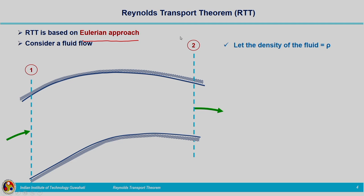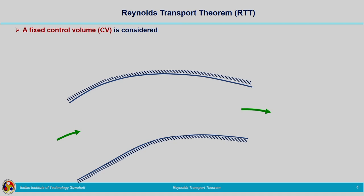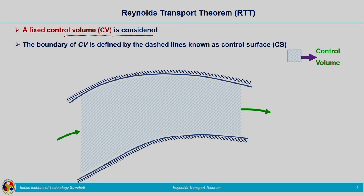Within this domain, we are going to consider our control volume. Regarding the fluid property, the fluid has a density of rho. Density is given by mass divided by volume, so if we know density and volume, we can calculate the mass of fluid contained within the particular domain. We are going to consider a fixed control volume within the flow domain, represented by the shaded region. This control volume has a boundary known as the control surface, represented by blue dotted lines.